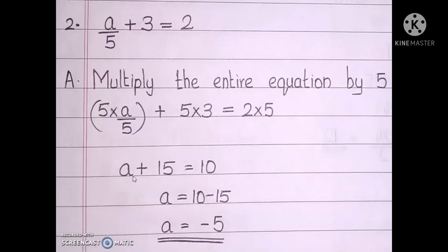So the equation you get is a plus 15 equal to 10. Taking plus 15 to the other side gives a equal to 10 minus 15. Students, look here — it is 10 minus 15, a smaller number minus a larger number. So you will get the answer as minus 5, or negative 5. The solution of this equation is a equal to minus 5.